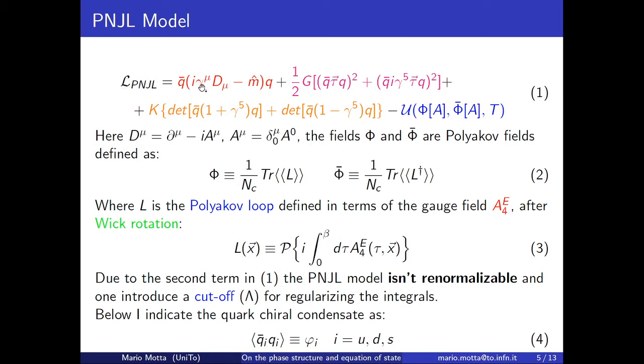Here is shown the Lagrangian: the red term is the Dirac term, the magenta and orange are the interaction terms, and the blue term is the gauge potential term. Dμ is the covariant derivative, and I'm using the Polyakov gauge. It's relevant only the temporal part of the vector Aμ.